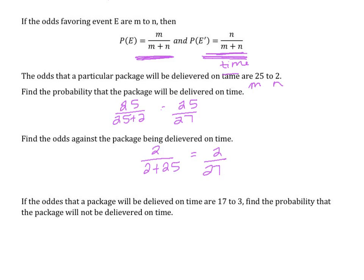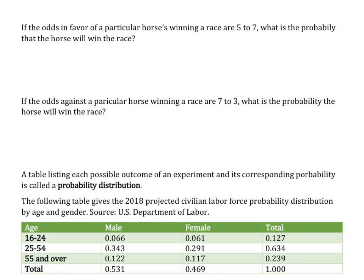If the odds that a package will be delivered on time are 17 to 3, find the probability the package will not be delivered on time. The 3 represents the 'not' outcome, so the probability is 3 over 17 plus 3, which equals 3 over 20. If the odds in favor of a horse winning the race are 5 to 7, the probability the horse wins is 5 over 5 plus 7, which is 5 out of 12. If the odds against a horse winning are 7 to 3, the probability the horse wins is 3 over 7 plus 3, which is 3 out of 10.